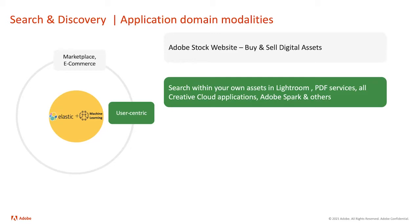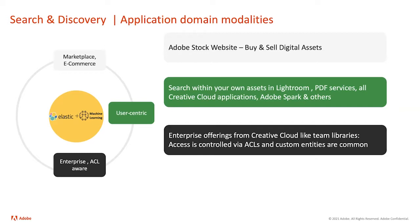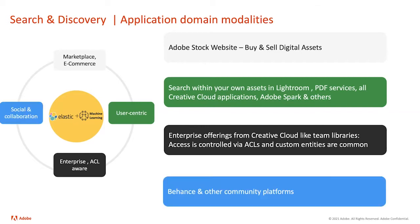The second is the user-centric search domain, where you're searching within assets that a user of an Adobe product is generating — for example, in Lightroom, PDF services, and other Creative Cloud applications. The third domain is enterprise search and discovery, which brings a lot of challenges: enterprises buying Creative Cloud licenses for their teams, where search covers not just what you own but what you have access to, which is heavily driven by ACLs. Enterprises can also bring their own custom entities to search on. The last is social and collaboration — community platforms like Behance, which you can think of as Instagram for creative people.